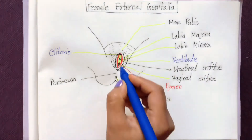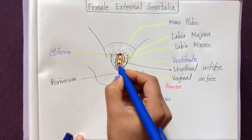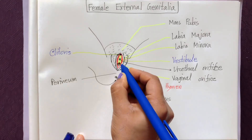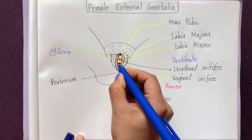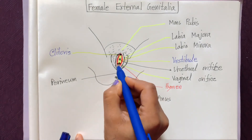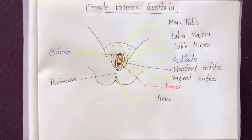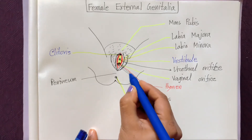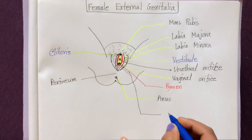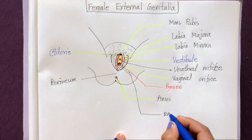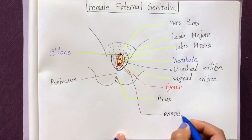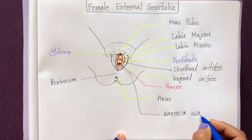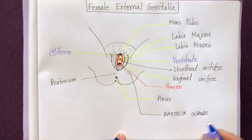On either side of the vaginal orifice, two glands are present. These two glands are called Bartholin's glands. Bartholin's glands help with lubrication during intercourse.